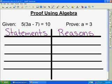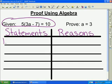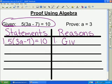So when we start this, our first step will always come from our given information. So we're going to start our first statement: 5 quantity 3a minus 7 equals 10. And the reason, where did it come from? It was given to us. Notice that we are numbering the statements and the reasons as we go, so if it takes more than one line to write something, everything's organized and we know what matches with what.